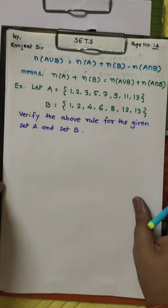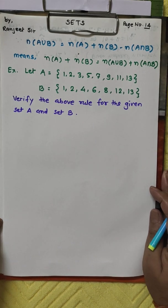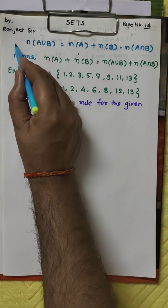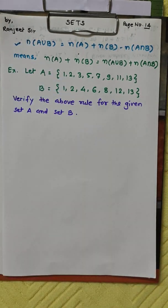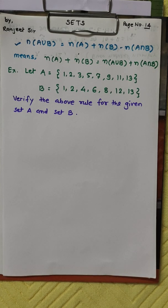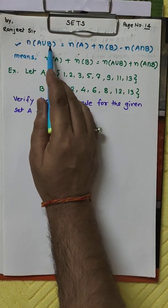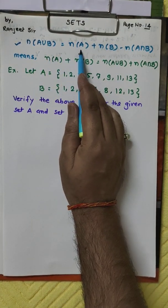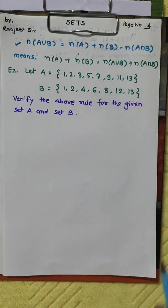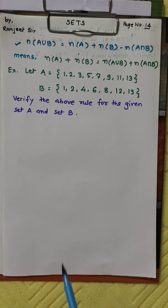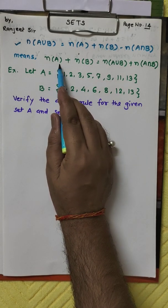The question is: number of A union B is equal to number of A plus number of B minus number of A intersection B. This is the formula: n(A∪B) = n(A) + n(B) - n(A∩B).